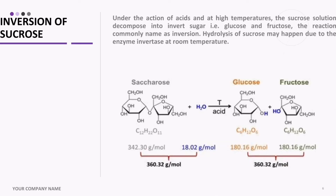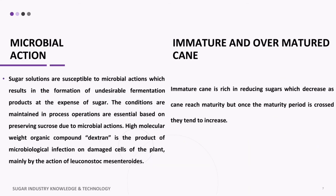Inversion of sucrose: under the action of acids and at high temperatures, sucrose solution decomposes into invert sugar, i.e., glucose and fructose. This reaction is commonly named inversion. Hydrolysis of sucrose may also happen due to the enzyme invertase at room temperature.